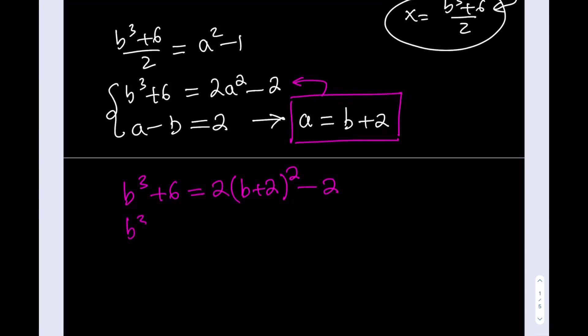Now let's go ahead and simplify this a little bit more. This is going to give me B cubed plus 6 is equal to 2 times B squared plus 4B plus 4 minus 2. B cubed plus 6 is equal to 2B squared plus 8B plus 8 minus 2, which is 6.